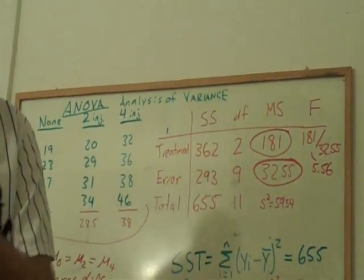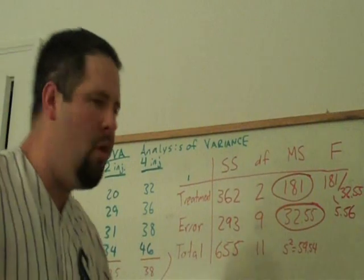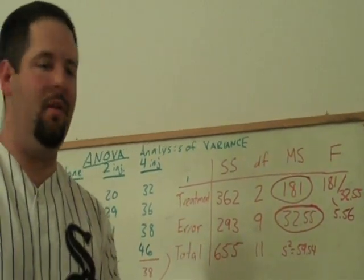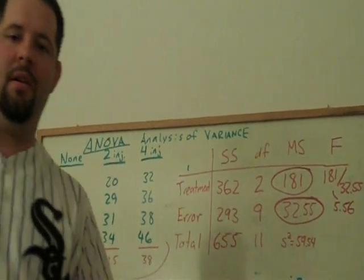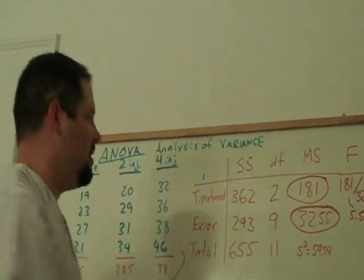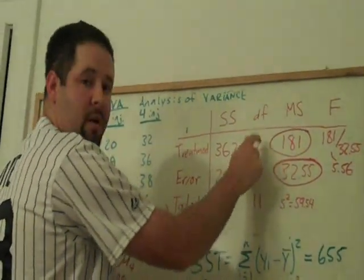And if you remember about the F distribution, to know which F distribution we're dealing with, you need to know the numerator degrees of freedom and the denominator degrees of freedom. In this case, we have it ready-made for us. There are two numerator degrees of freedom.